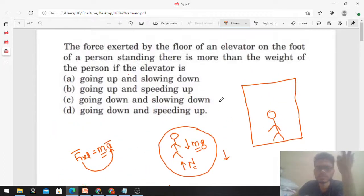So those cases you have to identify. Let's talk about all the possible options one by one. Going up and slowing down - going up means velocity is in the upward direction, and slowing down means acceleration is opposite to the direction of velocity.